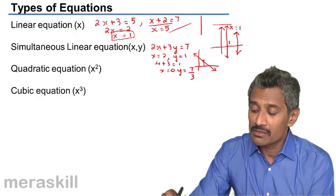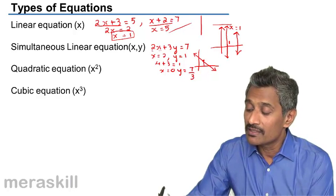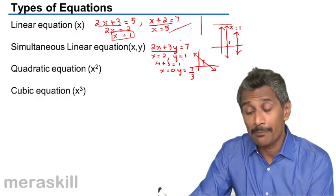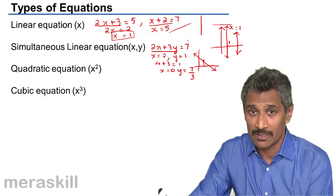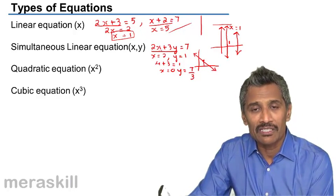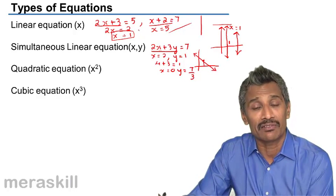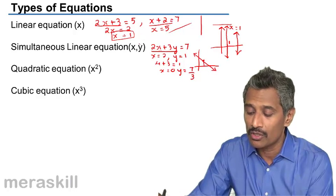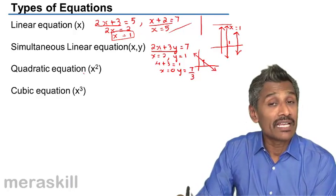Joining those two points gives a straight line, which is why this is also called a linear equation. This is a linear equation in one variable, whereas 2x plus 3y equals 7 is a linear equation in two variables. The shape differs, but both have a straight line as their graphical representation — that is why they are called linear equations.